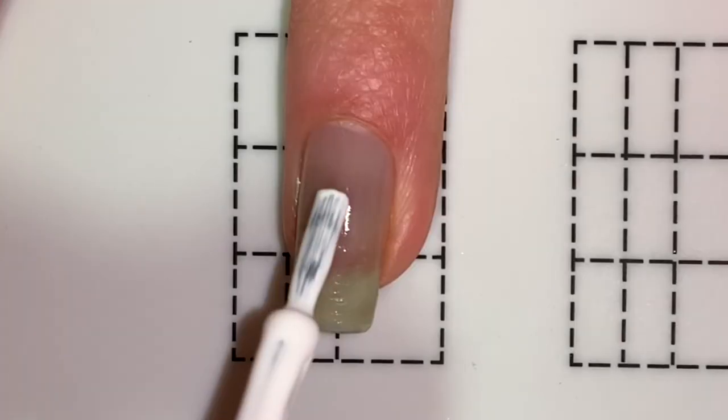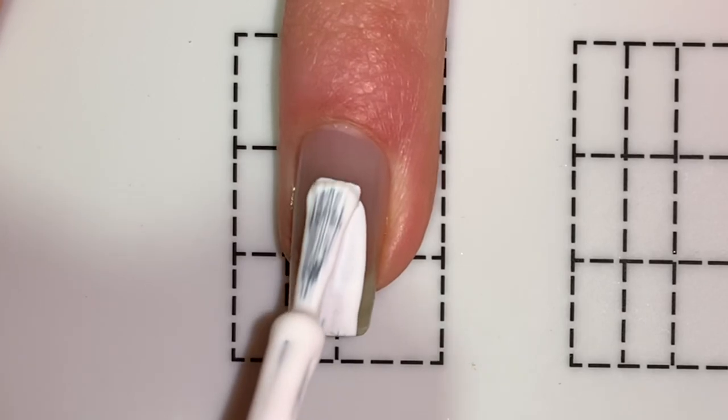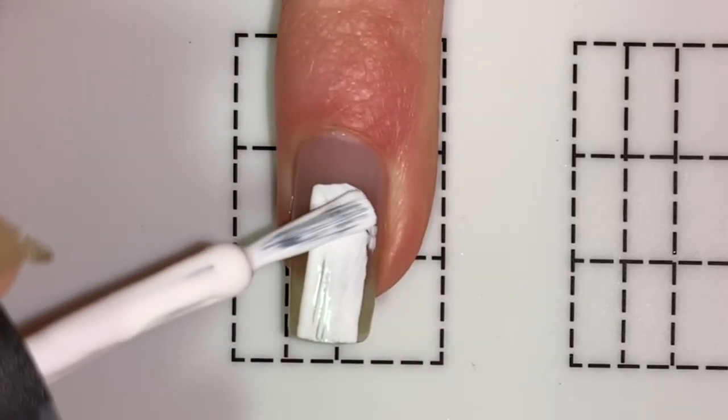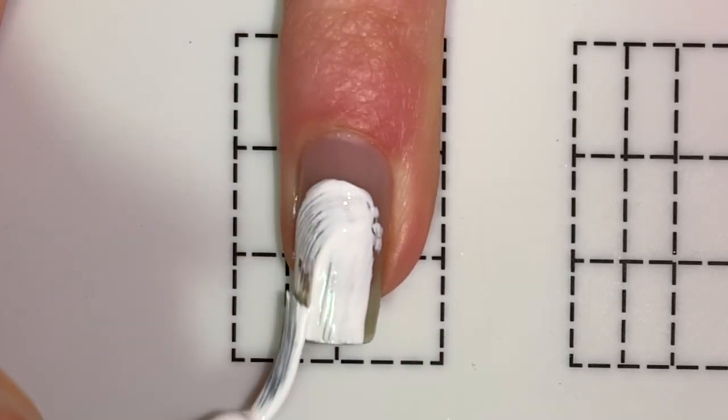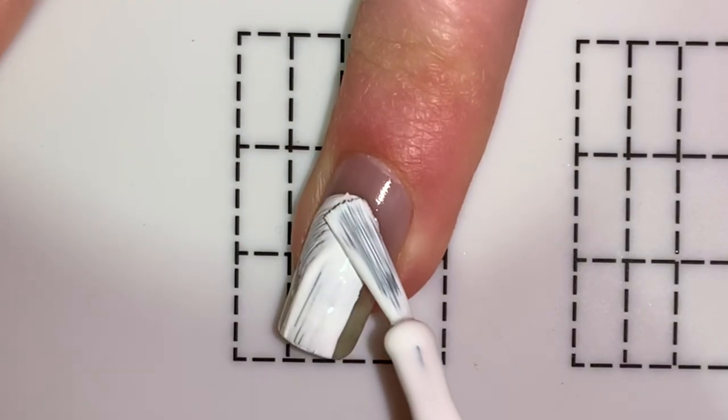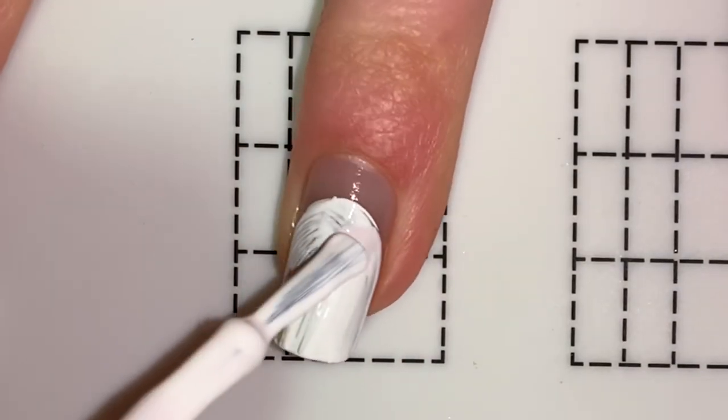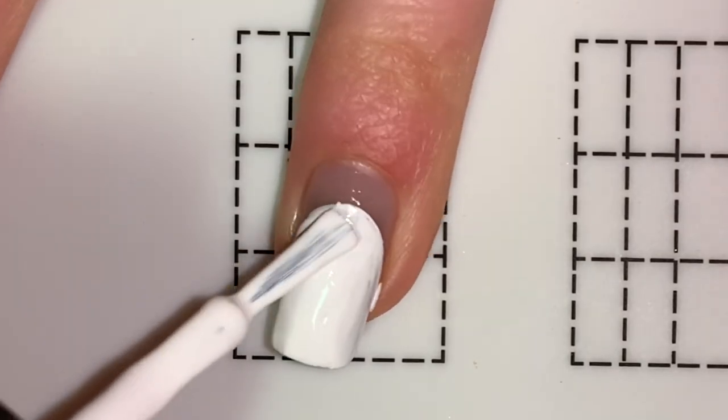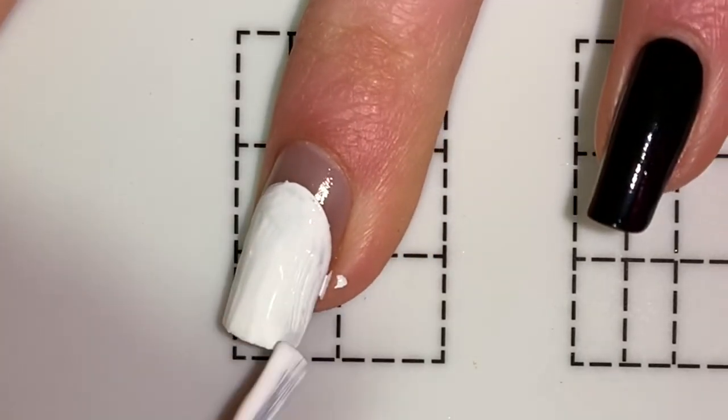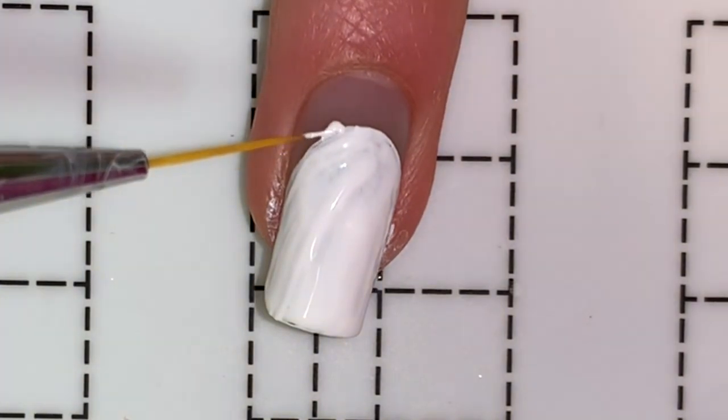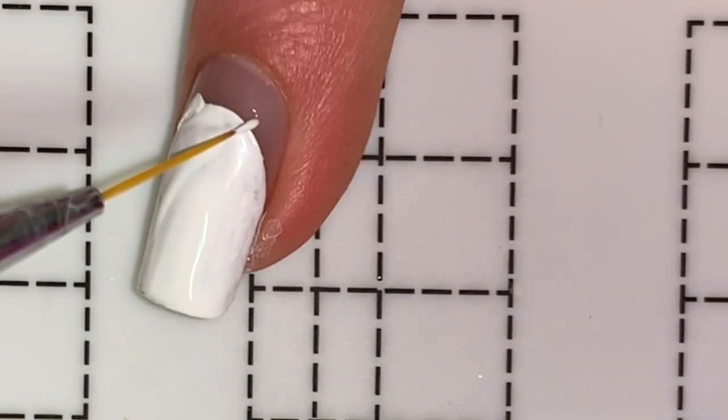Now for my ring fingernail, I'm doing pretty much the same thing, just a little bit bigger. Luckily, I was able to film the ears here if you were curious about that.